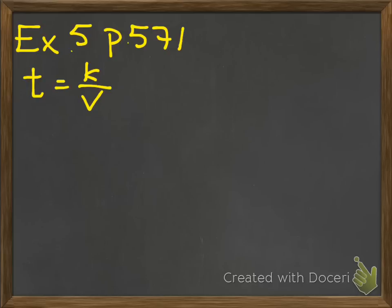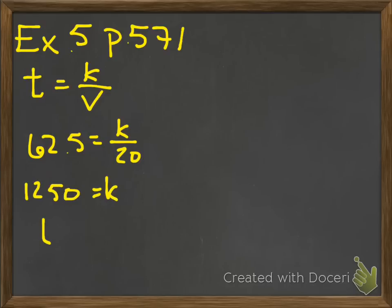Then they tell you that if there are 20 people building the house, it takes 62 and a half hours. So let's put the numbers where they belong: 62 and a half equals k divided by v, so k divided by 20. Then multiply. 20 times 62 and a half gives you 1250. That means then your specific function is T is equal to 1250 divided by v.